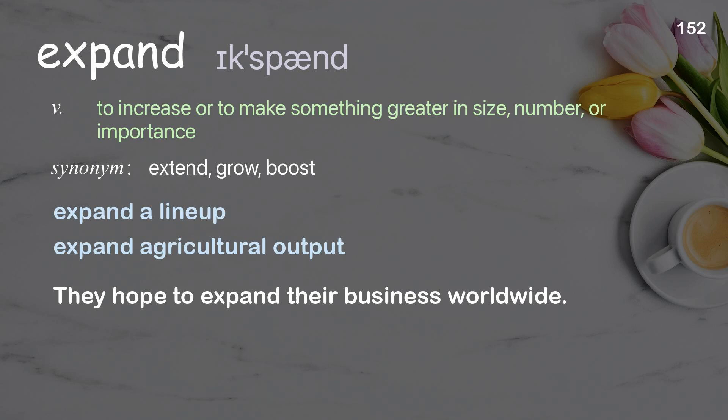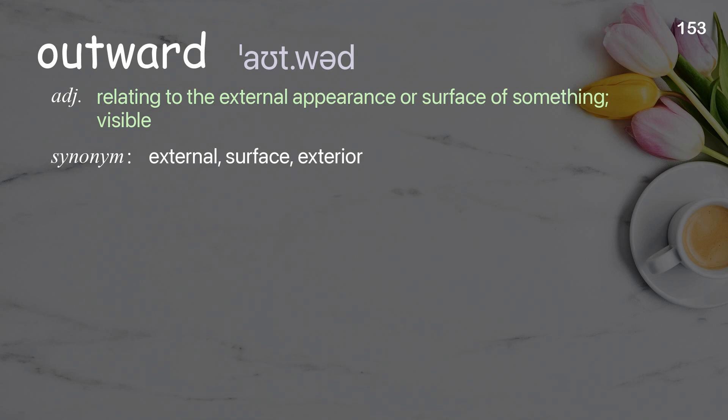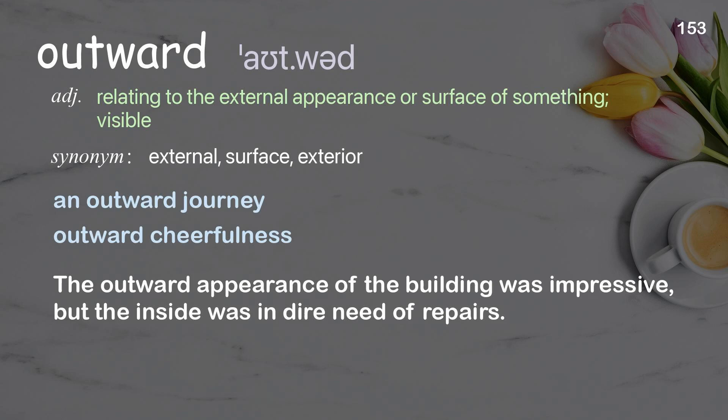Outward: relating to the external appearance or surface of something visible. Examples: an outward journey, outward cheerfulness. The outward appearance of the building was impressive, but the inside was in dire need of repairs.